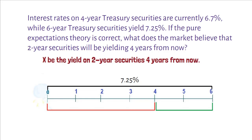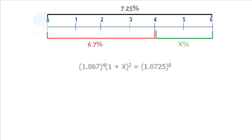We denote 4 years and 6 years securities returns in the timeline. If pure expectation theory is correct, we can form the equation with the help of time value of money concept.